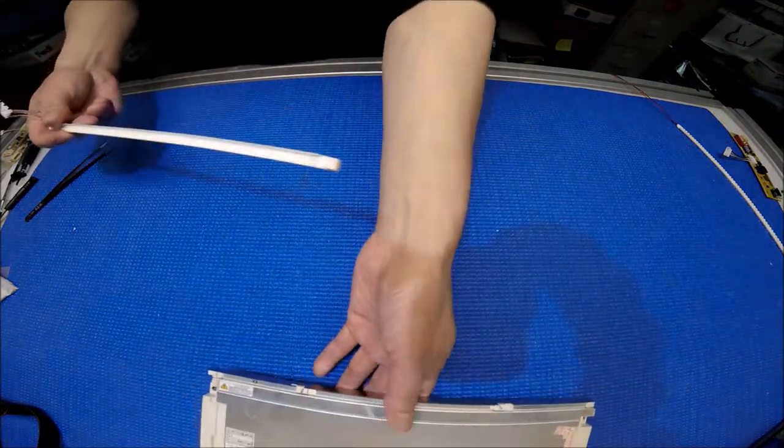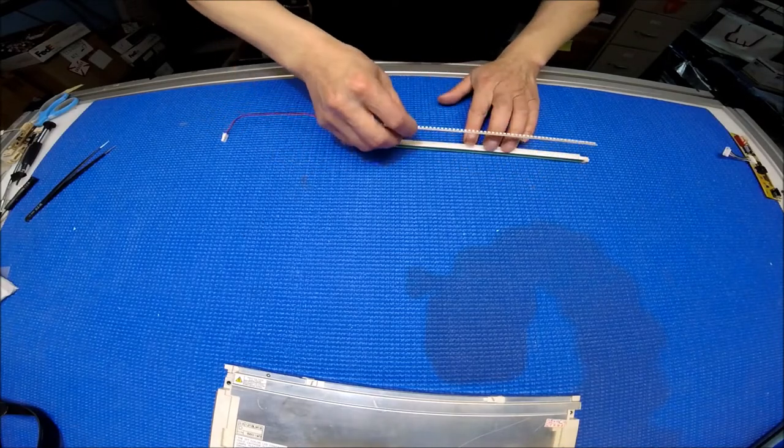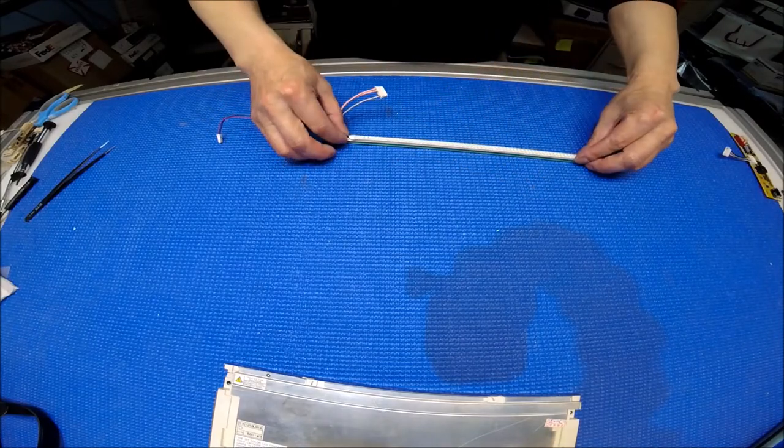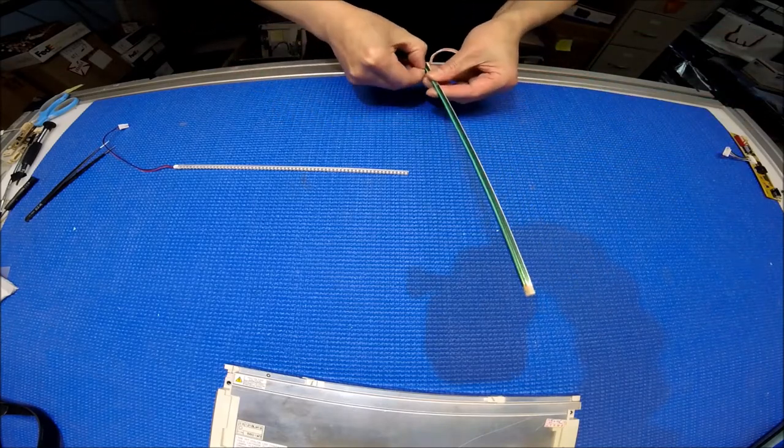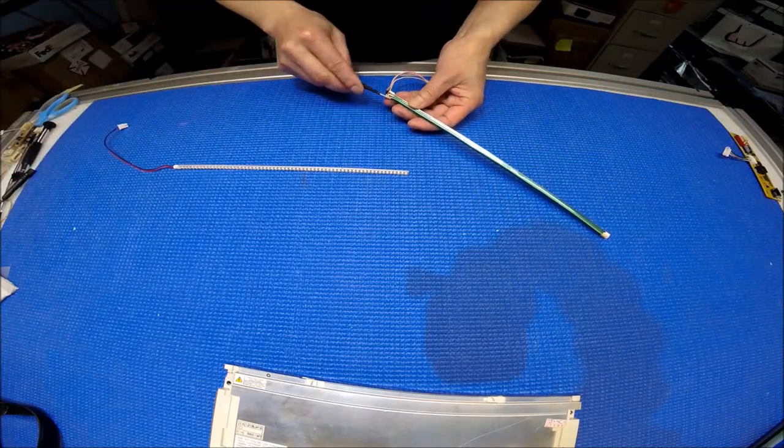Then what we do is we're going to mount it right back here. The reflector is wide enough, so the next step is to remove this.